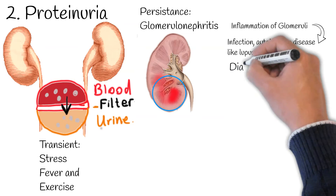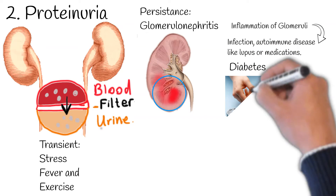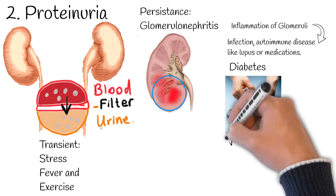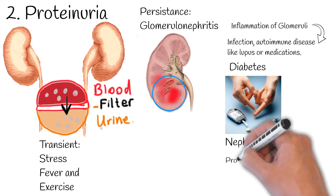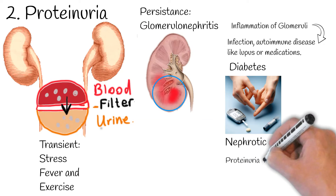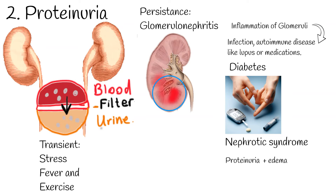Diabetes also causes damage to the kidneys, resulting in proteinuria. When proteinuria presents alongside swelling or edema, especially around the eyes, ankles, feet, or hands, it may indicate nephrotic syndrome.